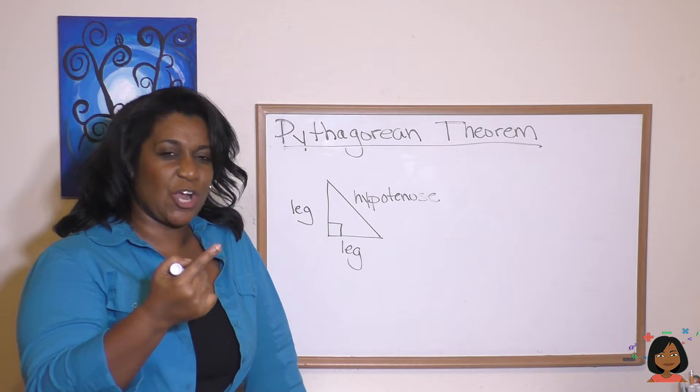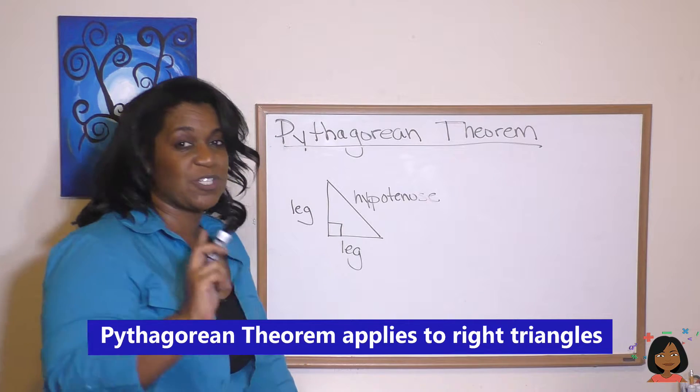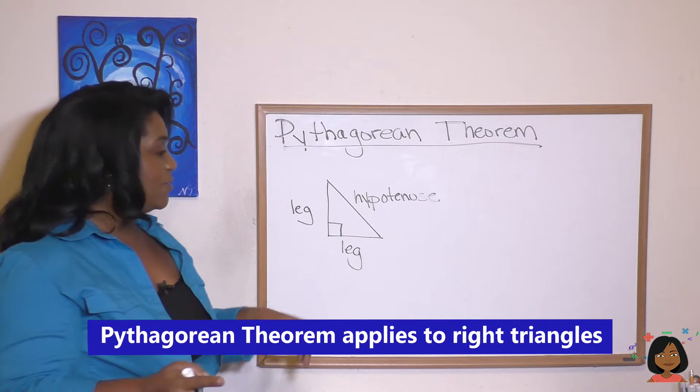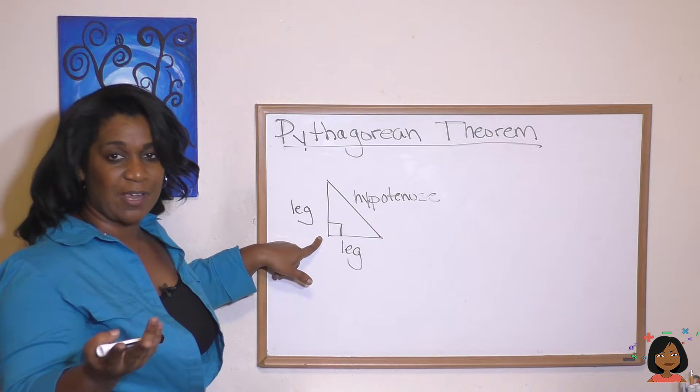Okay, so let's get started. The Pythagorean Theorem deals particularly with right triangles. So here we go, here we have a right triangle.